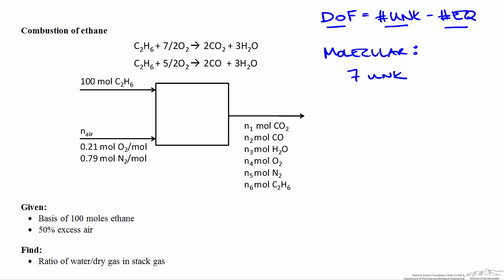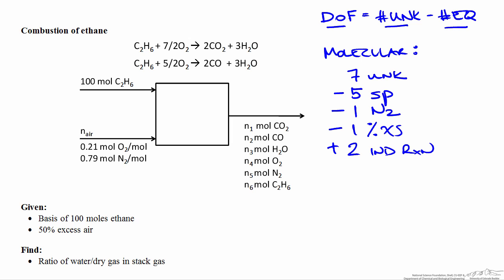Starting with molecular species: looking at the flow chart we have six variables representing species in the stack gas, and we also don't know how much air is fed, giving a total of seven unknowns. There are five reactive molecular species balances, plus a mole balance on inert nitrogen, plus one equation for the percent excess air — but we have not accounted for the degrees of freedom associated with each reaction. Each independent reaction adds one degree of freedom, accounting for the unknown extent of reaction. Tallying up gives two degrees of freedom, meaning we need two more specifications.